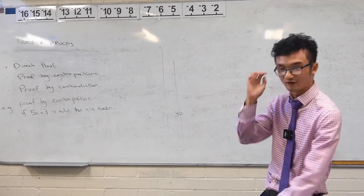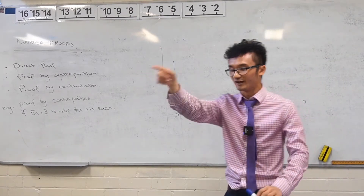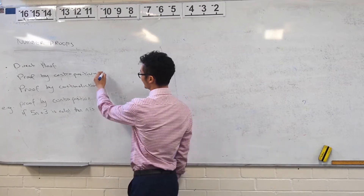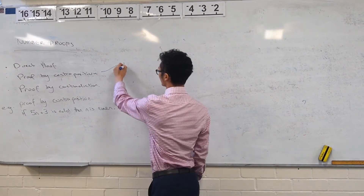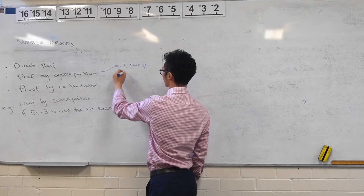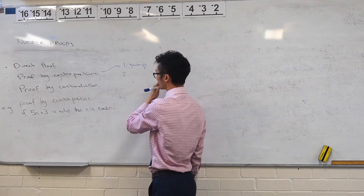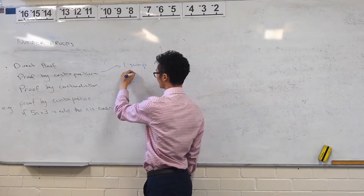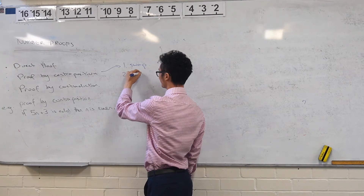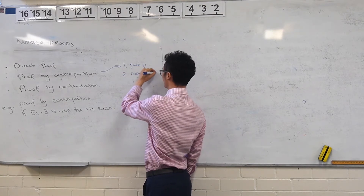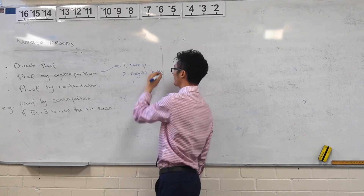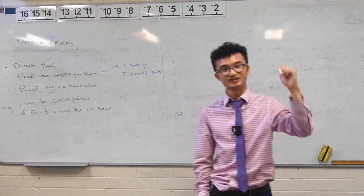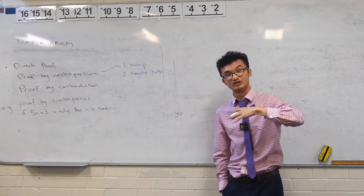This is a proof by contraposition. What were the steps for contraposition again? There were two. Two steps: swap — kind of like converse — and then negate. Negate both of them. Very important, right? And the idea was it's like a double negative equivalent. You're not changing the statement, you're just rewriting it in a different way.